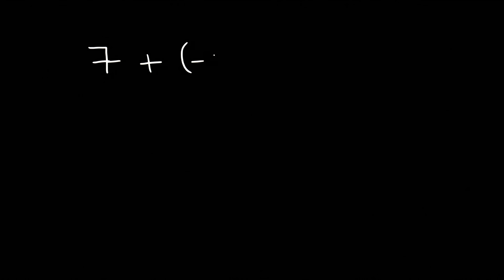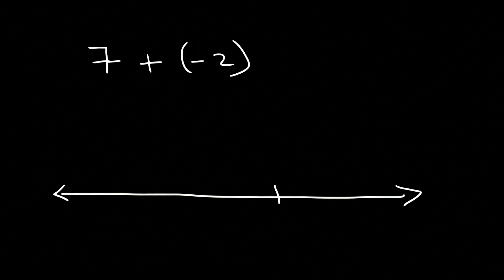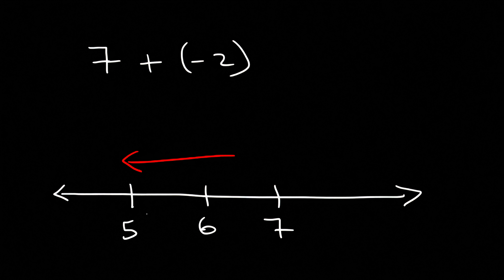What is 7 plus negative 2? Feel free to pause the video and try that. If we start with 7, all we need to do is travel two spaces to the left — landing on 6 and then 5. So 7 plus negative 2 is the same as 7 minus 2, which is 5.